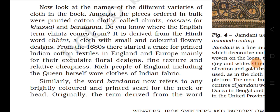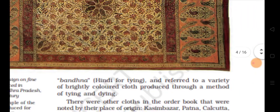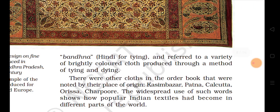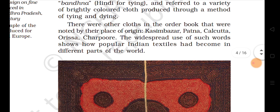Originally the term 'bandana' derived from the Hindi word 'bandana' and referred to a variety of bright colored clothes produced by the method of tying and dyeing. There were other clothes in the order book noted by their place of origin — Kasim Bazar, Patna, Kolkata, Orissa, Charpur. Kasim Bazar was a famous market for the textile industry. The widespread use of such words shows how popular Indian textiles had become in different parts of the world.